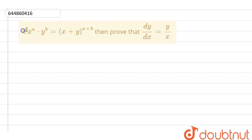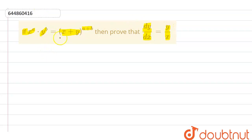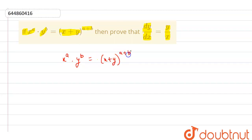In this question, it is given that x raised to power a into y raised to power b equals x plus y whole to the power a plus b, and we have to prove that dy by dx equals y upon x.